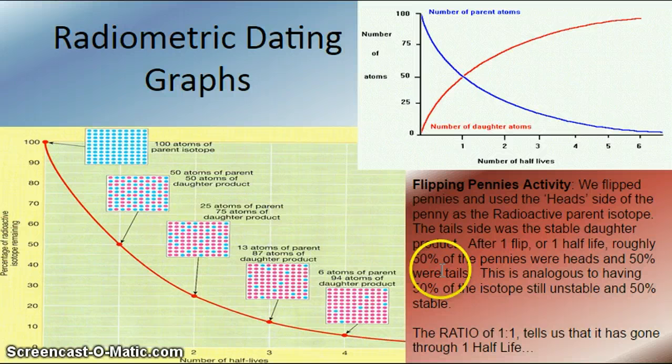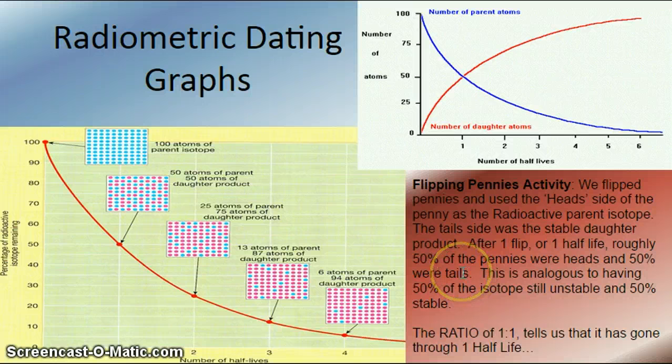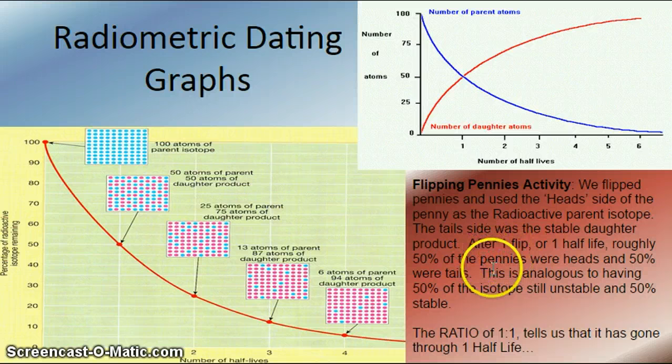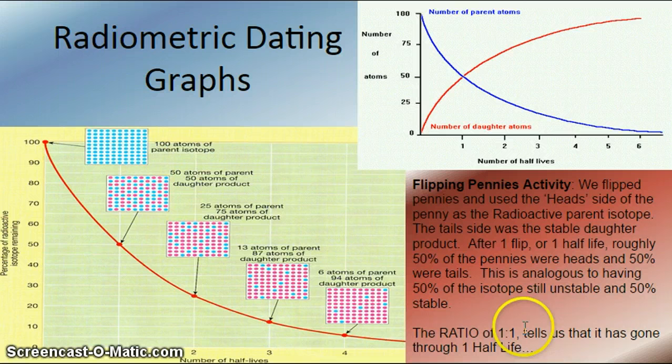Now if we do this like a couple times, or a trillion times, you would find that it only has a 50-50 chance of being heads, or 50-50 chance of being tails. So half the time it's going to be heads, and half the time it's going to be tails. Chances are very prescribed, it's 50-50. So this is analogous to having the one-to-one ratio, the 50 pennies, or 50 heads and 50 tails, is the same as having 50% of the isotope that's unstable and 50% that is stable. So we're looking at the ratio. The ratio of one-to-one tells us that it has gone through one half-life.